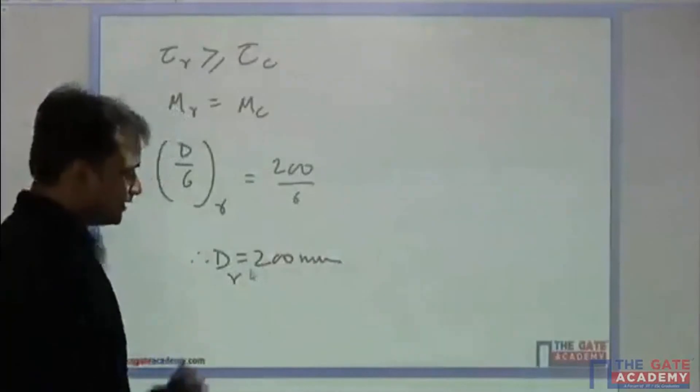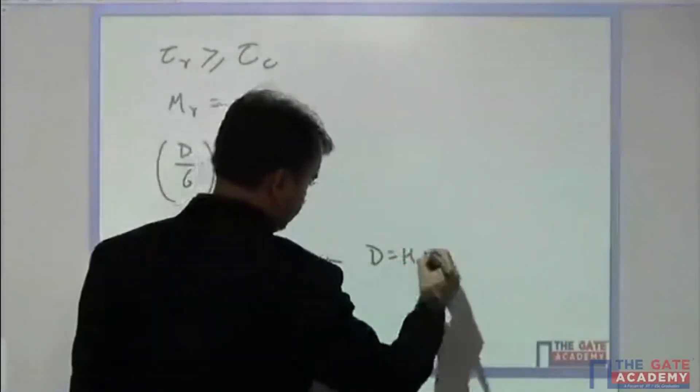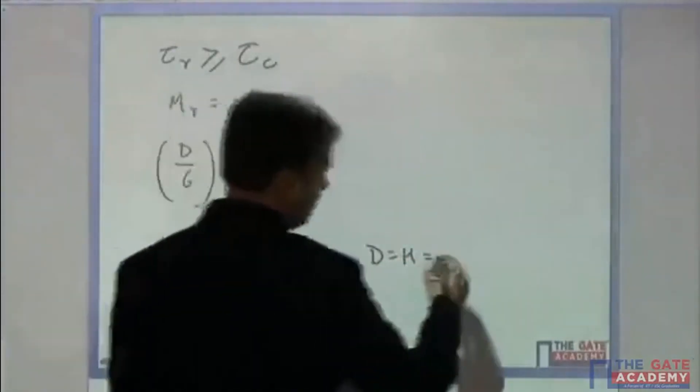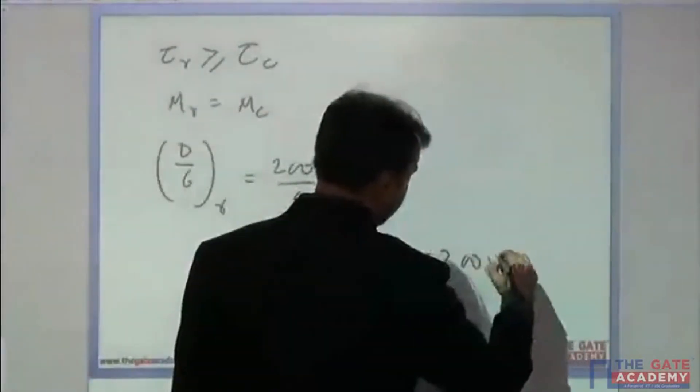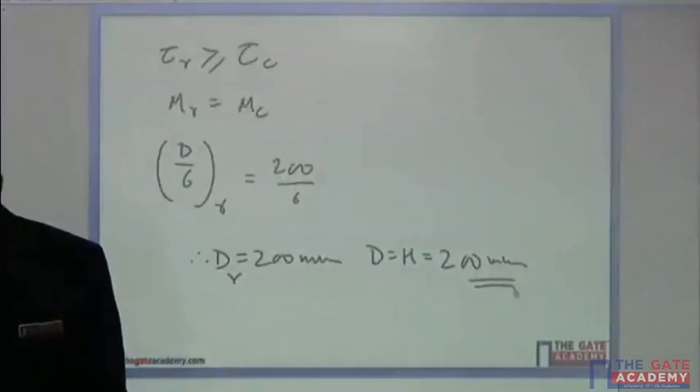This d is the diameter of the riser. Since the diameter is equal to height as given in the problem, therefore the height of the riser will be 200mm.